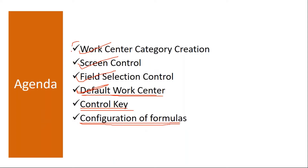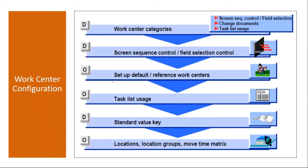These are the topics we'll be covering in the work center configuration. The main configuration is work center category. If required, we need to configure a new work center category, which controls screen sequence control and field selection control. On top of that, we will configure a default work center and cover standard value key configuration.